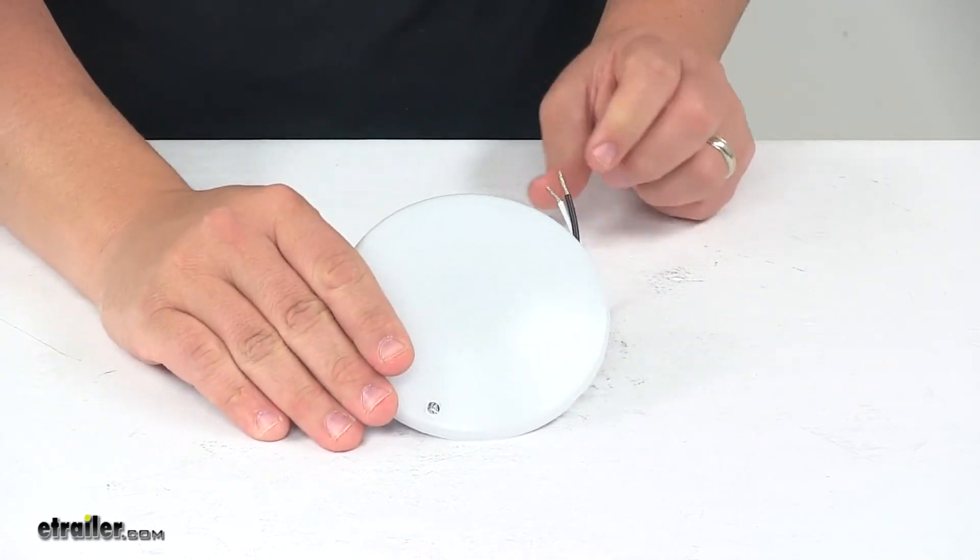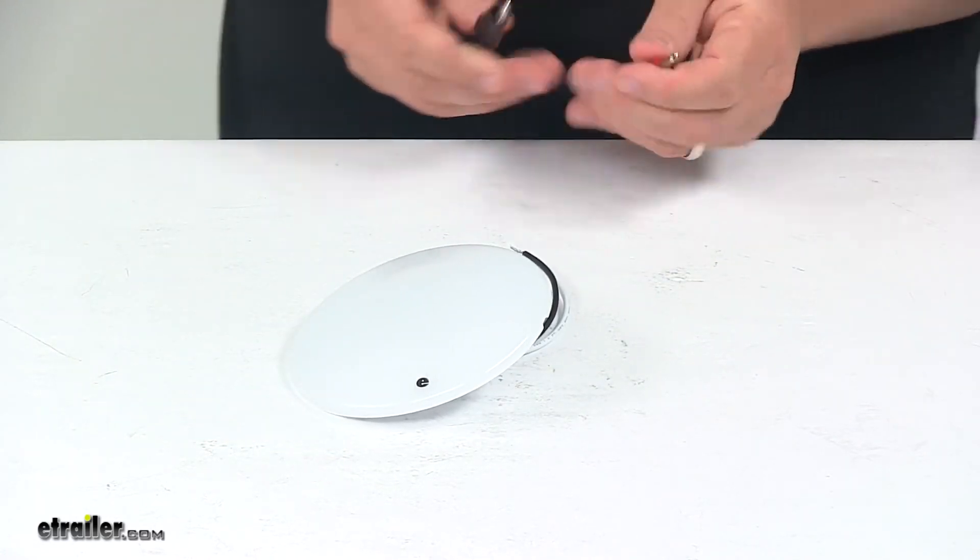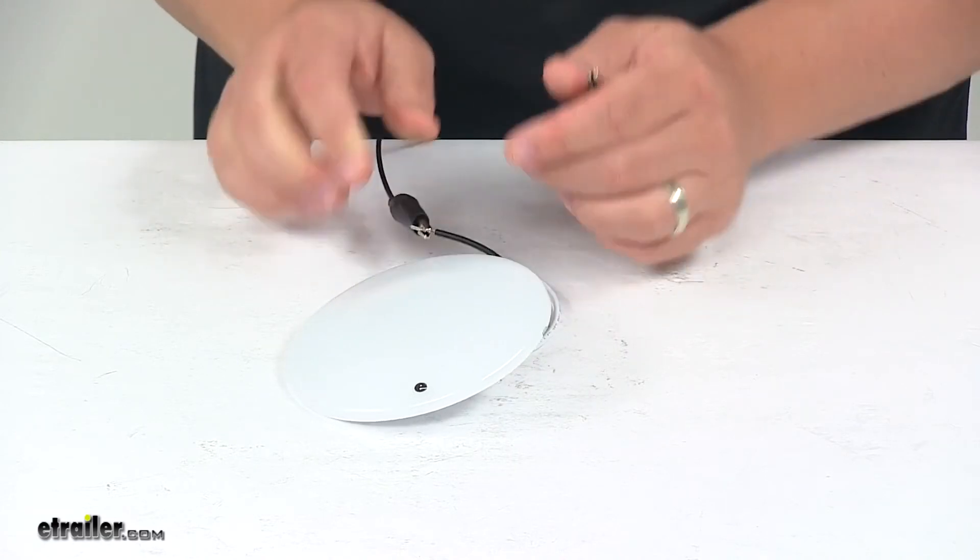We're going to go ahead and hook it up to power. That way you can see what it looks like with some power running to it. And we'll also be able to turn off our overhead lights so you can see it in a lower light setting.